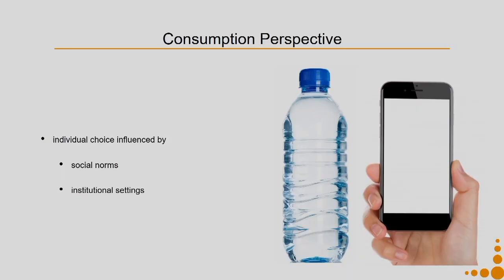So the first problem comes from individual choice influenced by social norms and institutional settings. As designers, we have to understand how to bring more sustainable consumption by influencing individual choice through social norms or institutional settings.